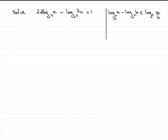But we've got a problem. That problem is that you've got a number in the front of this log. This rule only applies if you haven't got a number in front of the logs. So what do we do with this 2? We've got to get rid of it somehow. And we use another rule, the power rule for logs.